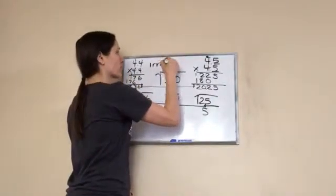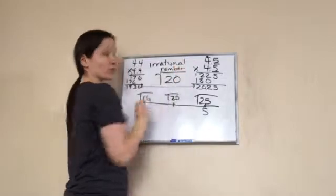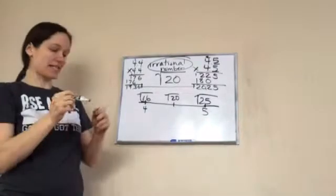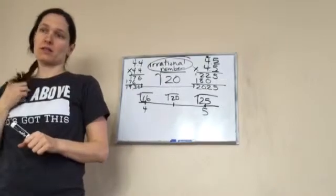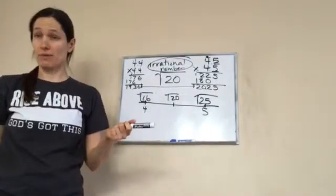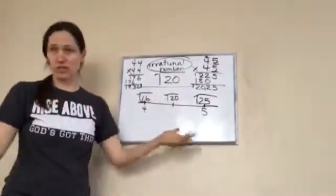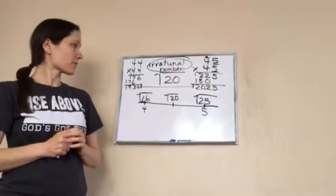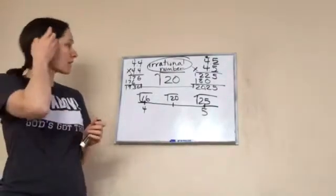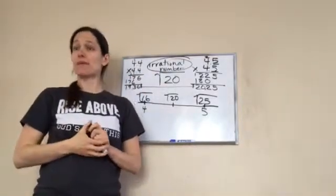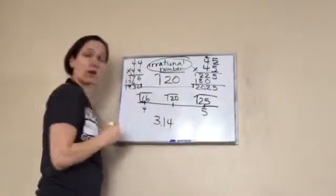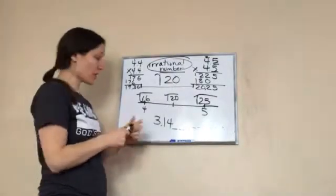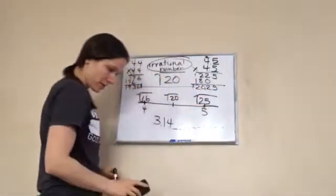That's why the square root of 20 is called an irrational number. An irrational number means nothing can go into it evenly — we can't find a perfect multiplication to get exactly 20. You know what else is an irrational number? Pi — because it's 3.14 and it keeps going on literally forever and ever.